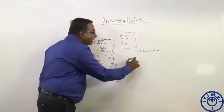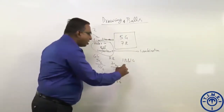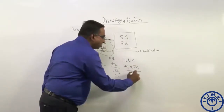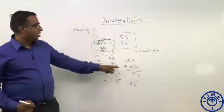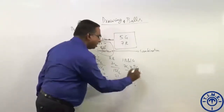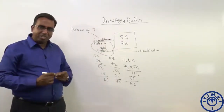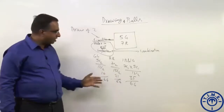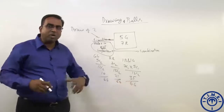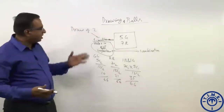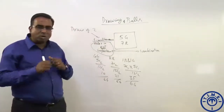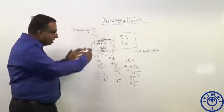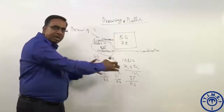You can have 1 red and 1 green. That 1 red you can draw in 7C1 ways, and that 1 green in 5C1 ways, divided by 12C2, giving 35 by 66. We can very clearly see: 35 plus 10 is 45, and 45 plus 21 is 66. All the possible elementary cases are accounted for — both red, both green, or one red one green.